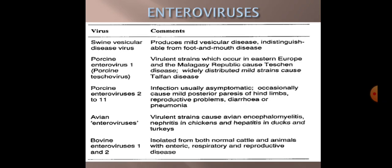If enterovirus is not listed as an option in competitive exams, you can also select picornaviruses, since enteroviruses are part of the Picornaviridae family. Porcine enteroviruses 2 to 11: infection is usually asymptomatic but occasionally causes mild posterior paresis of the hind limbs, reproductive problems, diarrhea, or pneumonia. Avian enteroviruses — virulent strains cause avian encephalomyelitis, an important poultry disease — and also nephritis, hepatitis in ducks and turkeys.